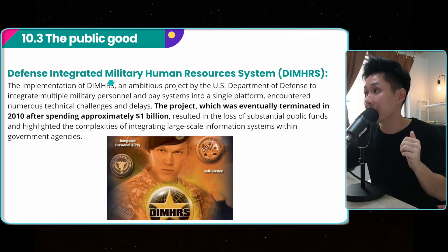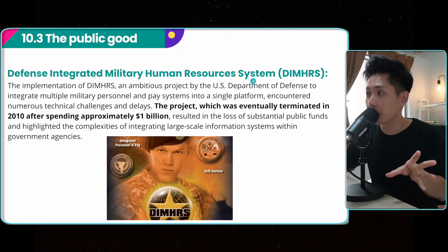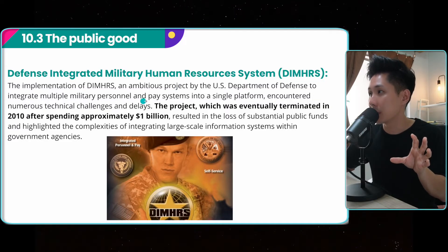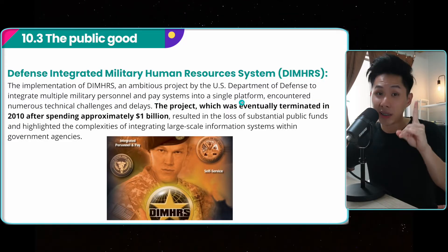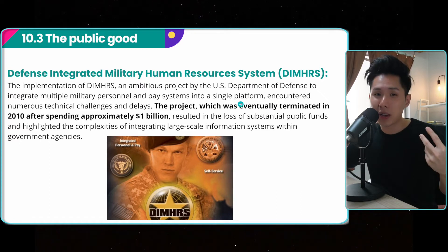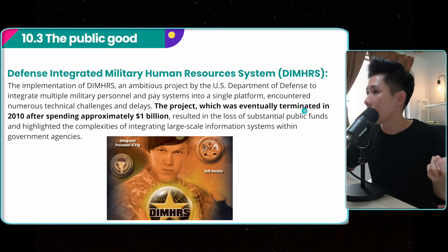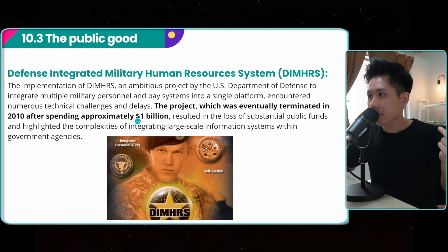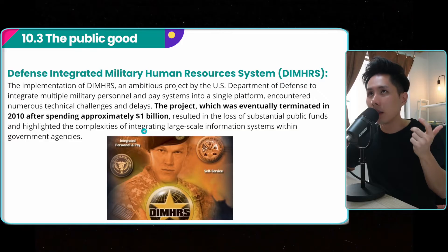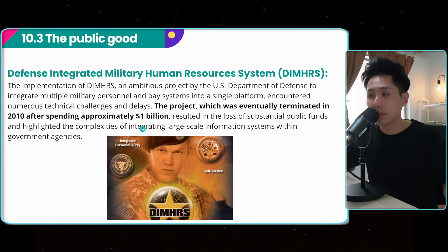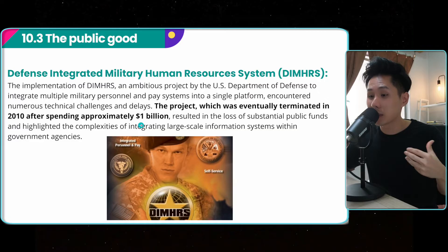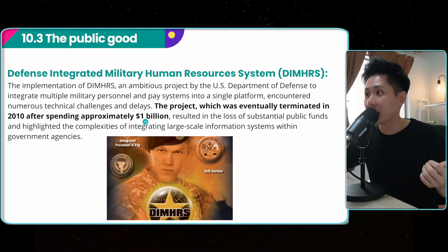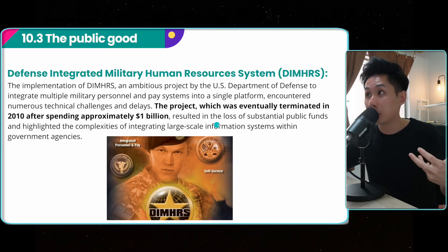The second example is the Defense Integrated Military Human Resource System — a system that tried to integrate multiple military personnel and pay systems into a single platform. Yet the project was terminated after spending approximately one billion dollars. If the software engineers had done a proper job, that one billion dollars would have been worth it. And if they found out they couldn't do it, they should have spent it in other areas to improve people's lives.